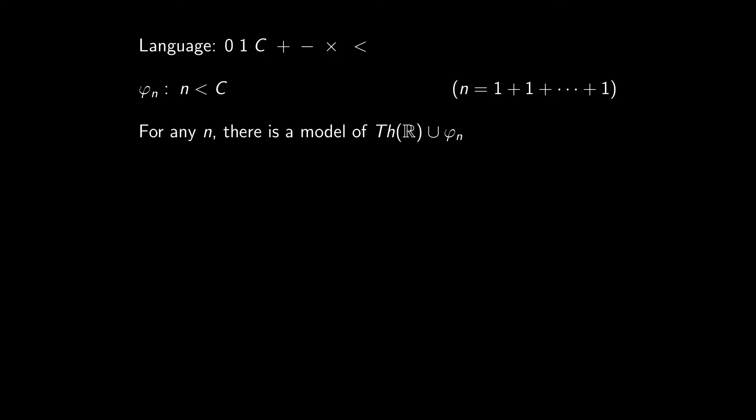Now, for any n, there is a model of the theory of R, that is, the list of all formulas true in R, and phi n. Just take R and interpret the symbol c as n plus 1. Now, because of compactness, we are guaranteed that there is a model R star of the theory of R and all phi n's, for all n.